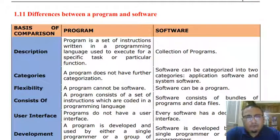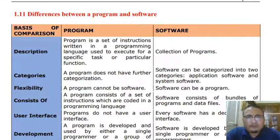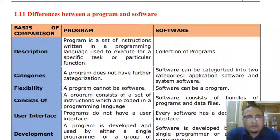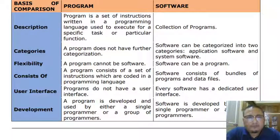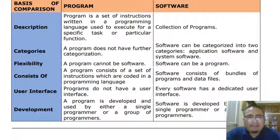Before moving forward, I want you to differentiate between two different terms: program and software. In terms of description, a program is a set of instructions capable of performing a particular function, whereas a software is a collection of programs. In terms of category, a program cannot be further categorized, whereas software can be categorized into application software and system software, as we have already learned.